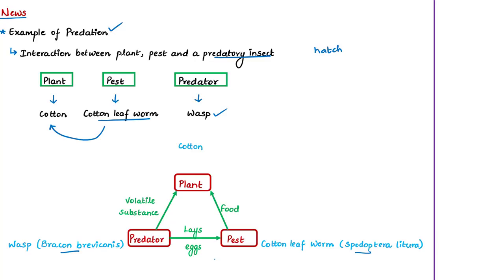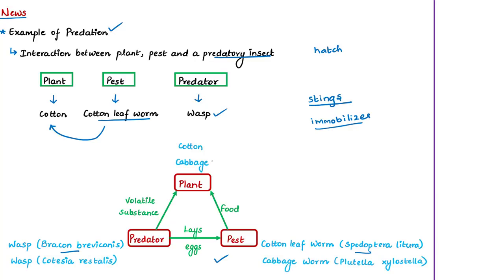This is a type of triangular interaction involving a plant, a pest, and a predatory insect. The offspring of wasps are benefited and the cotton leaf worm is harmed. The wasp first stings the worm and injects a toxic substance into it, which immobilizes the worm. The wasp then takes its own time to lay its eggs on the skin of the worm. The news article also discusses a similar example involving the cabbage plant and the cabbage worm Plutella xylostella.